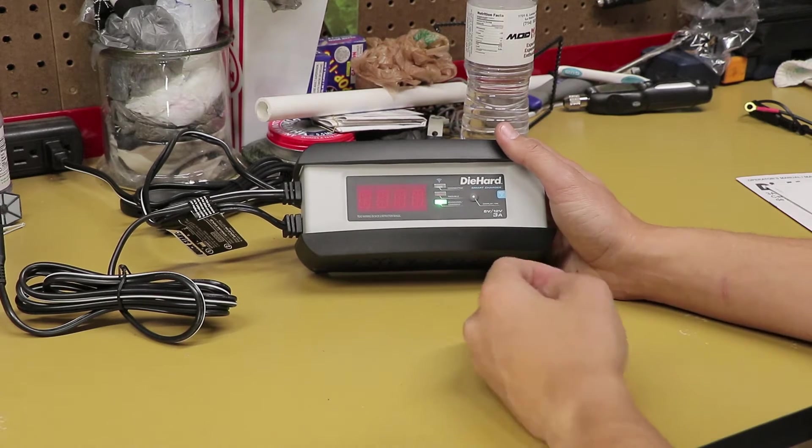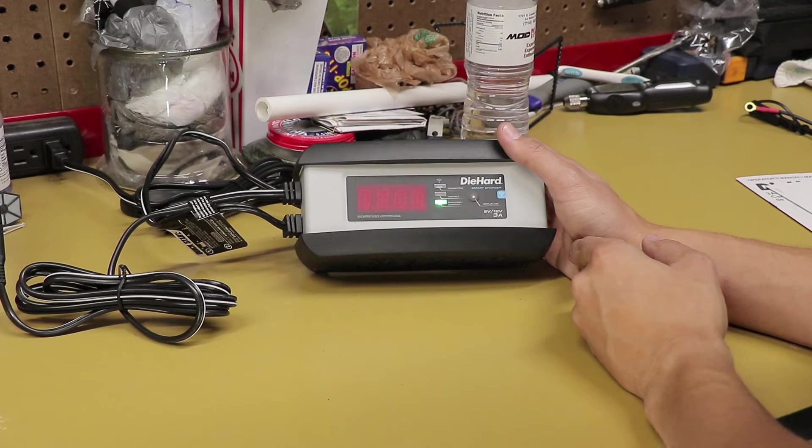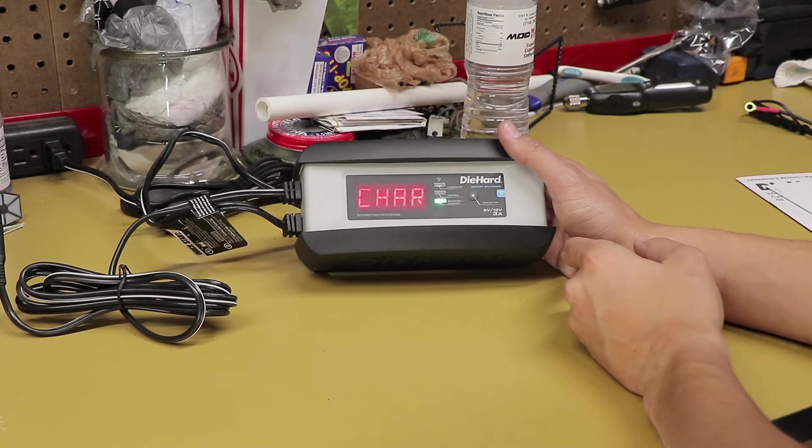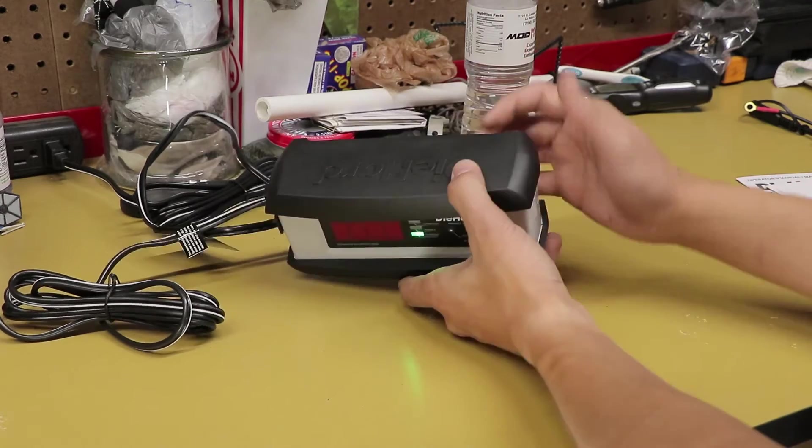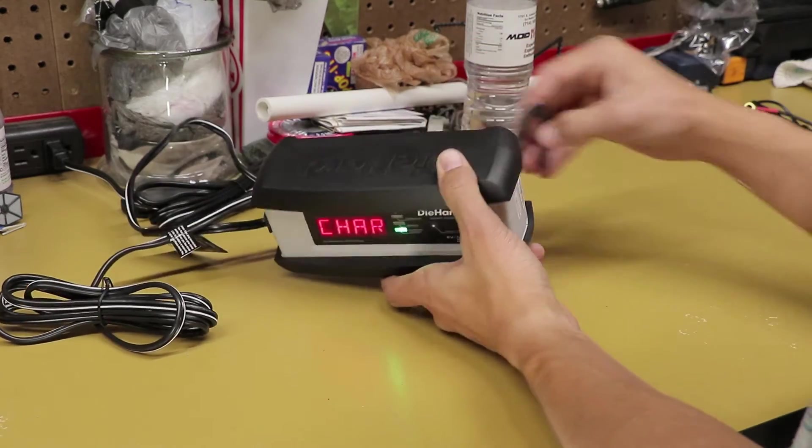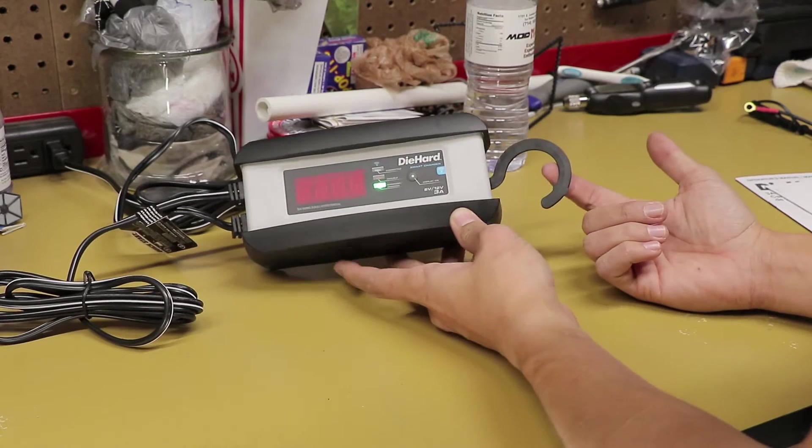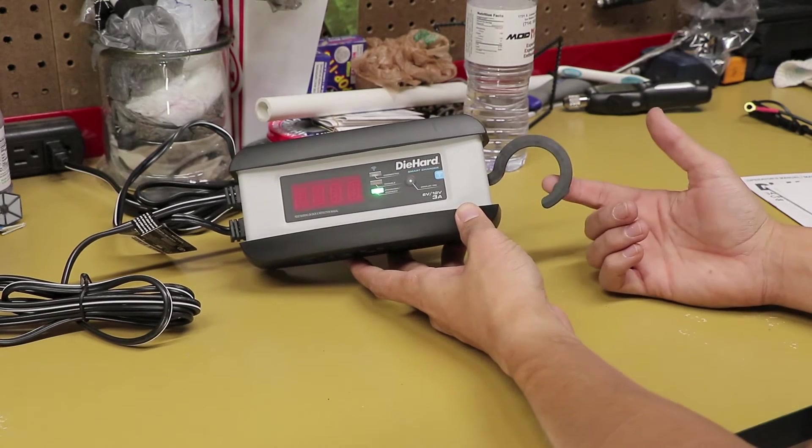Now, this charger does have the Wi-Fi function, which we'll be getting into here in a moment. But in the meantime, at least we can see that the charger does indeed work, and it's got the nice little hook on the back there. So if you want to hang it up under the hood or hang it on the wall or something like that, obviously that makes it nice and easy.